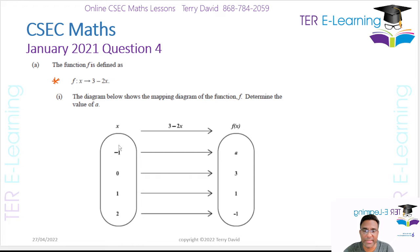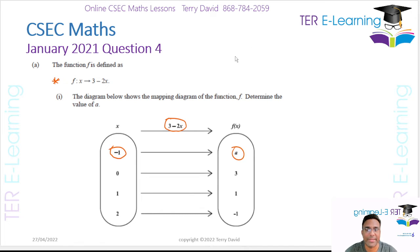So in this function here, 3 minus 2x, this is the input to the function — that is the value of x — and we want to figure out what is the value of e. All we need to do is plug minus 1 into the function. So this is going to be 3 minus 2 multiplied by minus 1.